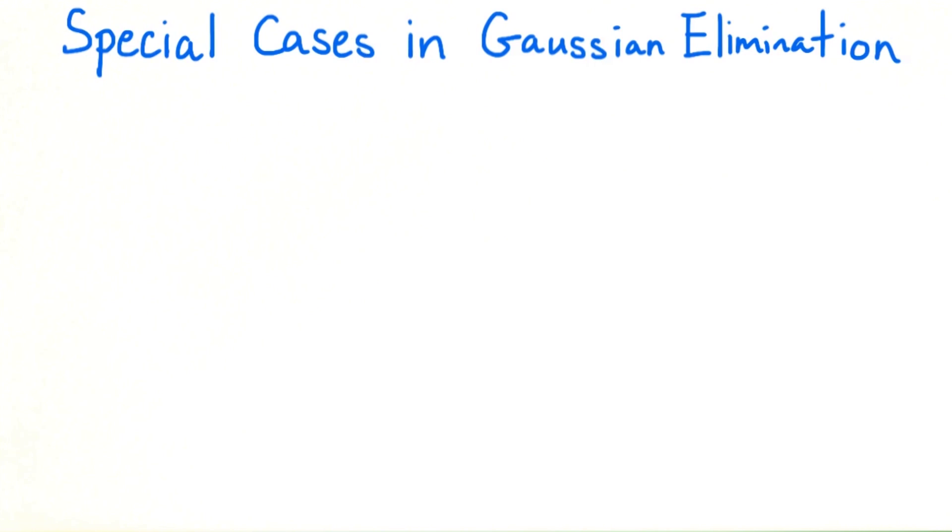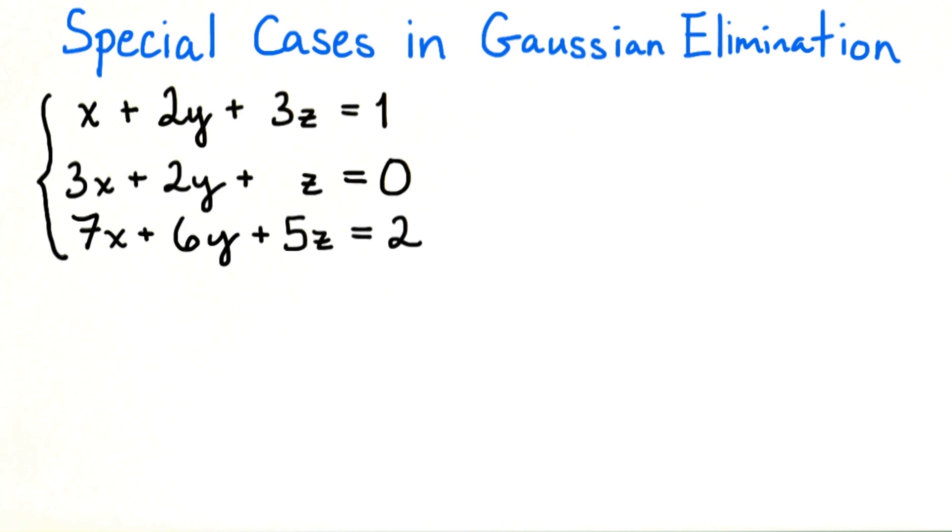In the previous examples, we looked at systems of equations that had a unique solution. However, as we've seen, it's not always the case that there is a unique solution to every system. We need the Gaussian elimination procedure to be robust against these cases. Let's look at the following system.